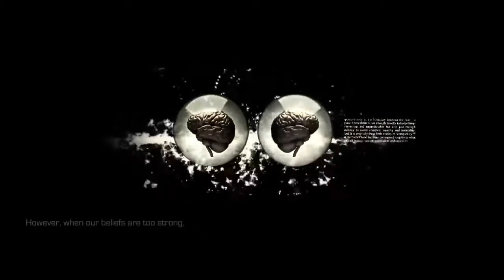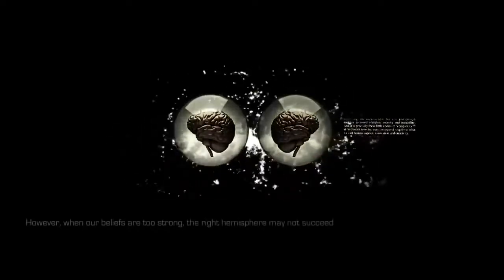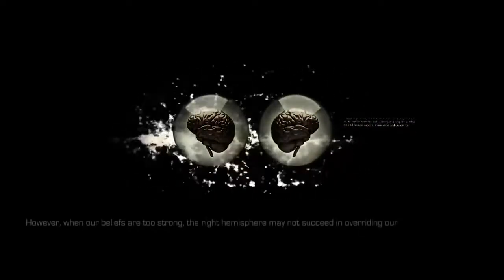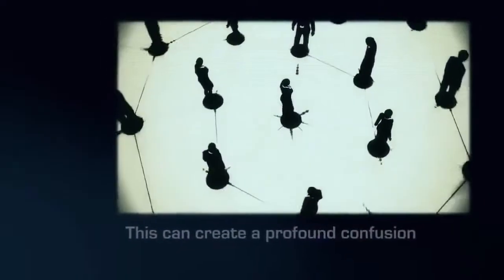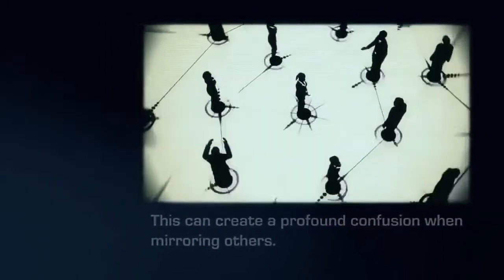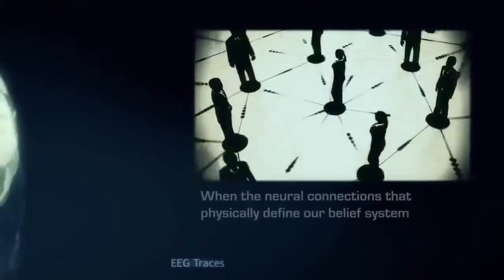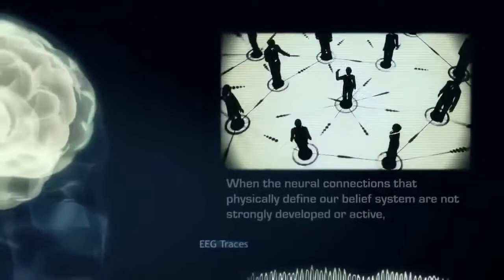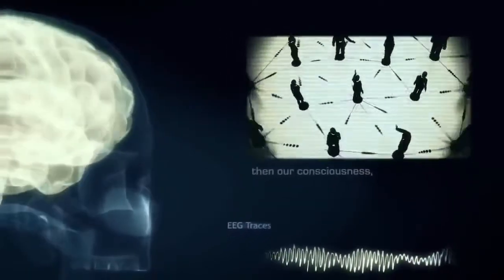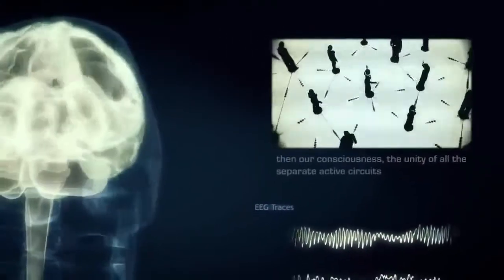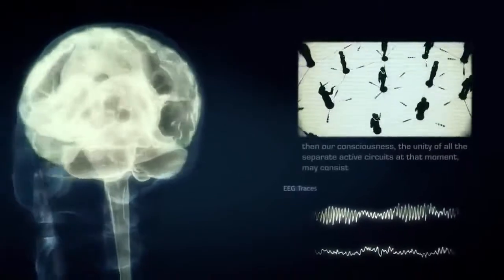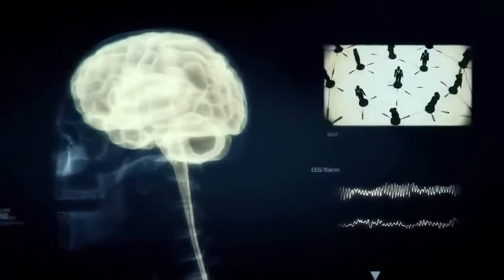However, when our beliefs are too strong, the right hemisphere may not succeed in overriding our denial. This can create a profound confusion when mirroring others. When the neural connections that physically define our belief system are not strongly developed or active, then our consciousness, the unity of all the separate active circuits at that moment, may consist mainly of activity related to our mirror neurons.